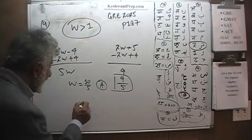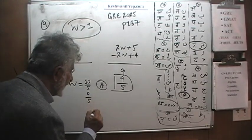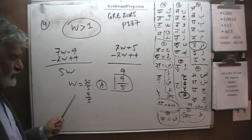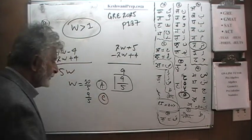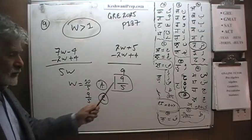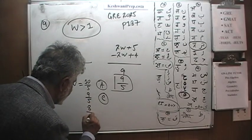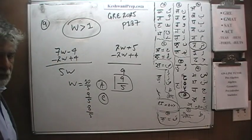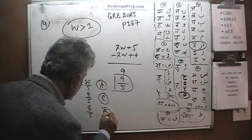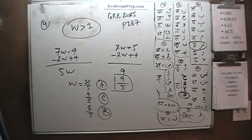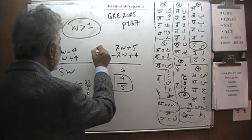Can w be 9 fifths? Of course w can be 9 fifths. If w happens to be 9 fifths, then the answer is C because they are equal. Can w be 8 fifths? Of course w can be 8 fifths, there is still more than 1, in which case the answer is going to be B. As you can see the answer keeps changing.